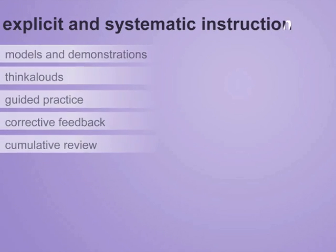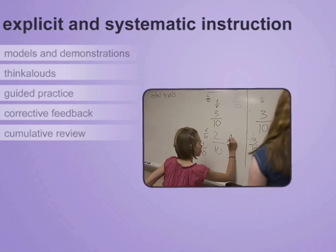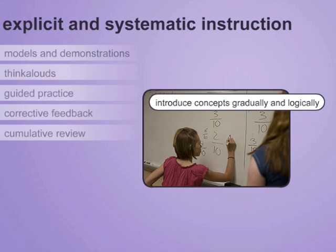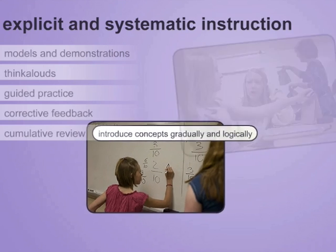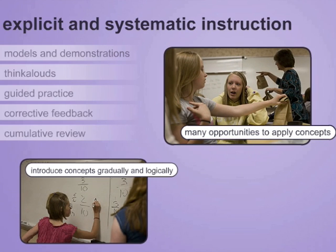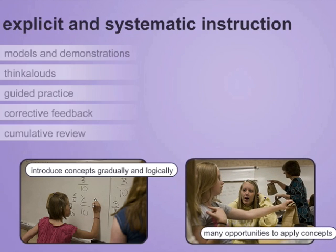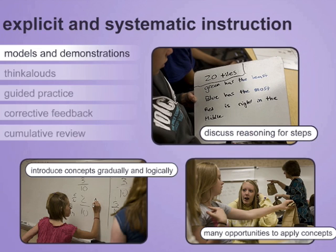Systematic instruction means that teachers introduce mathematics concepts gradually and in a logical order. Students are given many opportunities to apply new math concepts in a wide variety of contexts. Explicitness means giving clear explanations of concepts and using step-by-step modeling to show how to solve problems and perform operations.